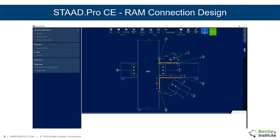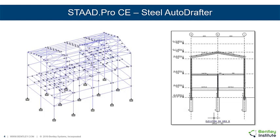Next, we will focus on designing connections for our steel structure in RAM Connection. And finally, after designing our connections, we will go into the Steel Auto Drafter workflow where we will create our 2D drawings from our 3D STAAD Pro model.